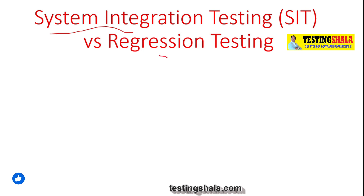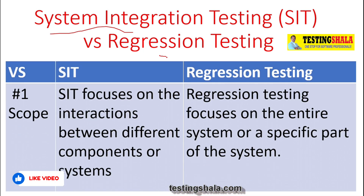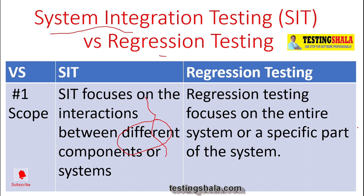The first key difference is in terms of scope or objective. In SIT, we focus on testing different individual components developed by the developer that get integrated together. Integration testing is performed to ensure that all integration aspects from one component to another really work fine. In regression testing, we focus on the entire system.